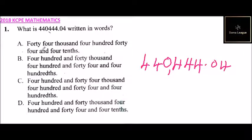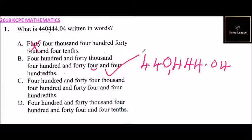Checking answer A — it says forty four thousand, that is wrong because we have four hundred and forty thousand. Answer B says four hundred and forty thousand, four hundred and forty four — that's correct. And four hundred, which is the same as four of a hundred or 0.4, so that answer is correct.